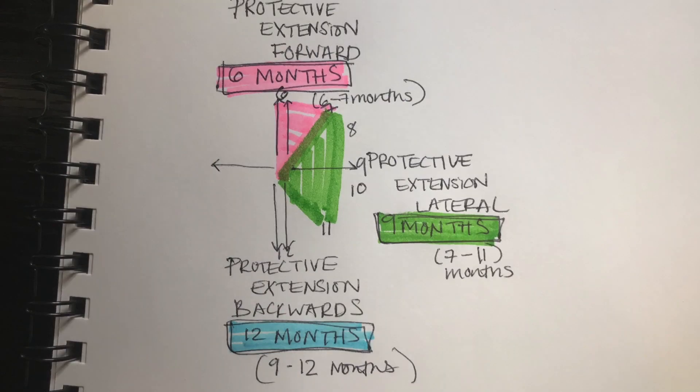The next reflex you should see the baby develop is your protective extension lateral reflex. And you can see this happening around 7 to 11 months.